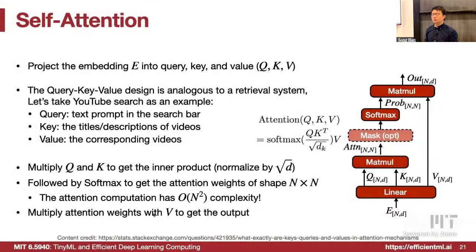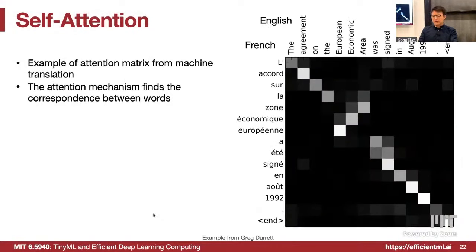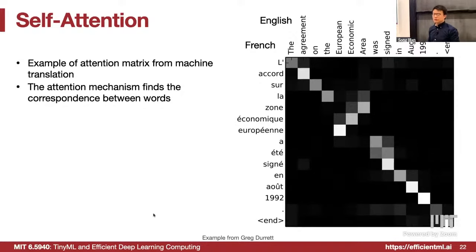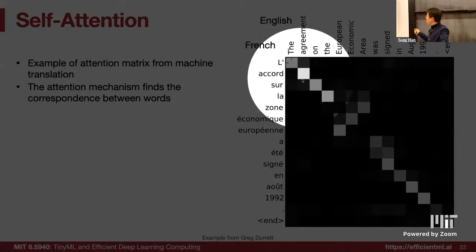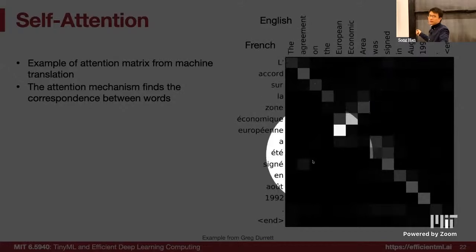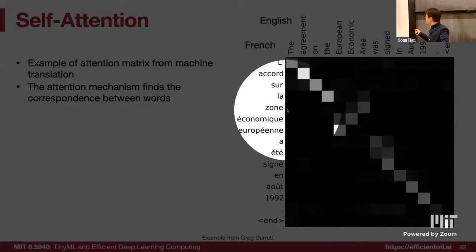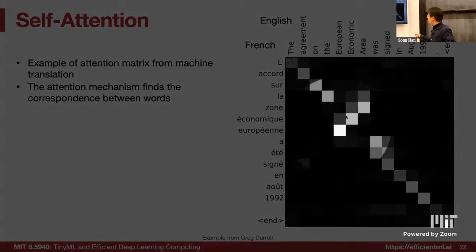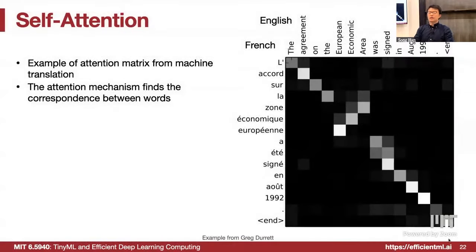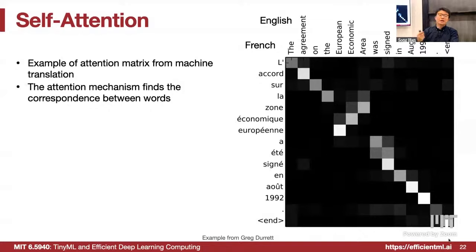An example attention map for machine translation shows English on one axis and French on the other. Most words attend to exactly the same word in the other language, appearing on the diagonal. Some words have reverse ordering, shown as a reverse diagonal. The attention mechanism finds correspondences between words through training, not by any manually defined rules.